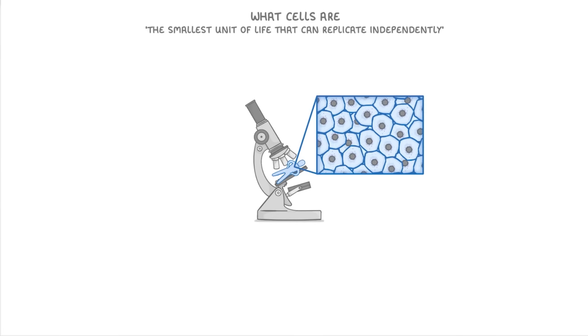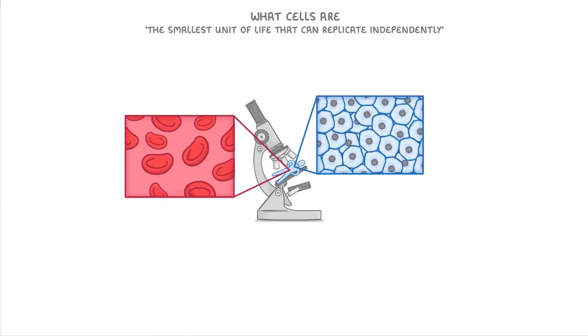To see what I mean, imagine we took a human and looked at him closely under a microscope. We'd see that he's made up of cells. So the skin contains skin cells, the blood contains blood cells, and so on.